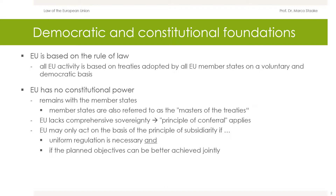The European Union has no constitutional power; this remains with the member states. For this reason, the member states are also referred to as the masters of the treaties. Since the European Union has no constitutional power, it lacks comprehensive sovereignty. Therefore, the principle of conferral applies. As an outgrowth of this principle, the European Union may only act on the basis of the principle of subsidiarity if uniform regulation is necessary and if the planned objectives can be better achieved jointly.